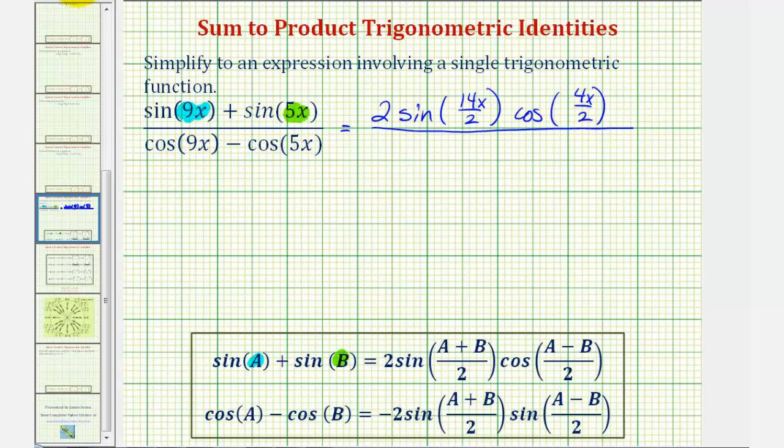Now for our denominator, notice A is equal to 9x, and again, B is equal to 5x.